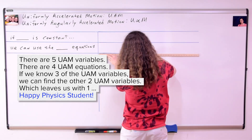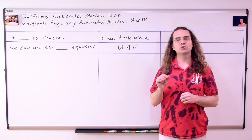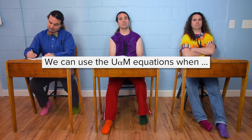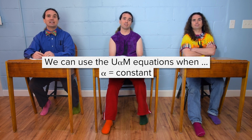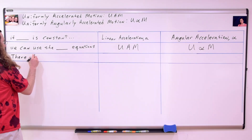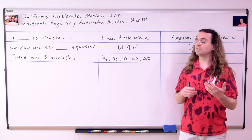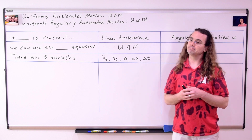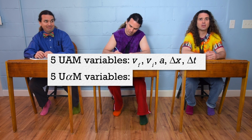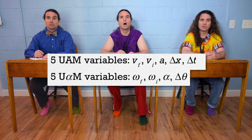Mr. P.: UAM is linear. U-Fishy-M is angular. Bobby, when can we use the Uniformly Angularly Accelerated Motion equations? Bobby: We can use the U-Fishy-M equations when the angular acceleration of the object is constant, meaning angular acceleration equals a number. Mr. P.: There are five variables in Uniformly Accelerated Motion: velocity final, velocity initial, acceleration, displacement, and change in time. Just like there are five UAM variables, there are five U-Fishy-M variables: angular velocity final, angular velocity initial, angular acceleration, angular displacement, and change in time.